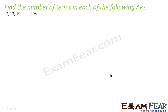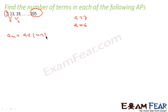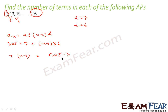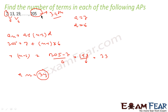Find the number of terms in each of the following APs. In this AP, the difference is 6: 13 minus 7 is 6, 19 minus 13 is 6. So a is equal to 7, d is equal to 6. The last term an is equal to a plus (n minus 1)d. So 205 equals 7 plus (n minus 1) into 6. Therefore n minus 1 is 198 by 6, which is 33, and n is equal to 34.